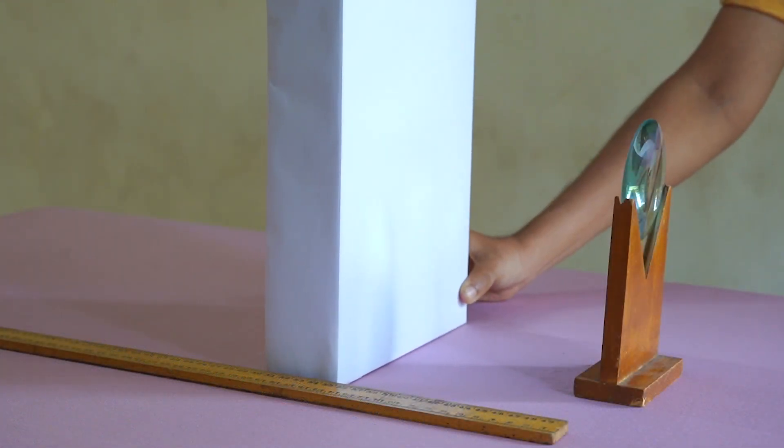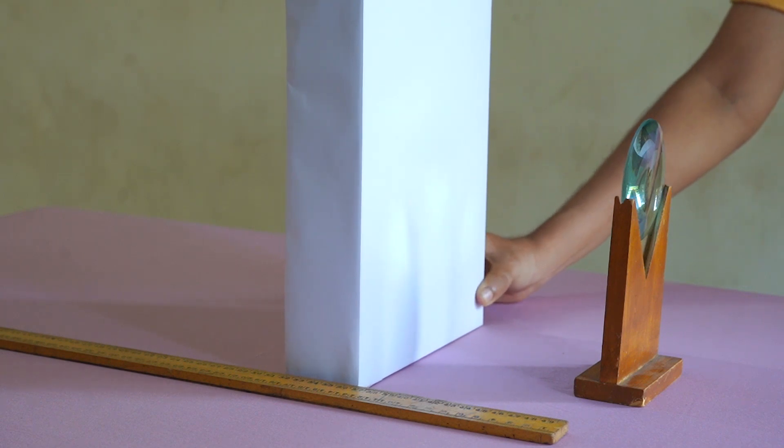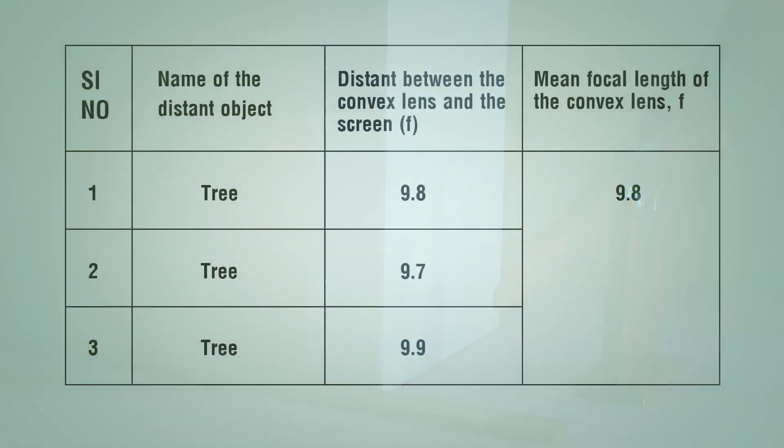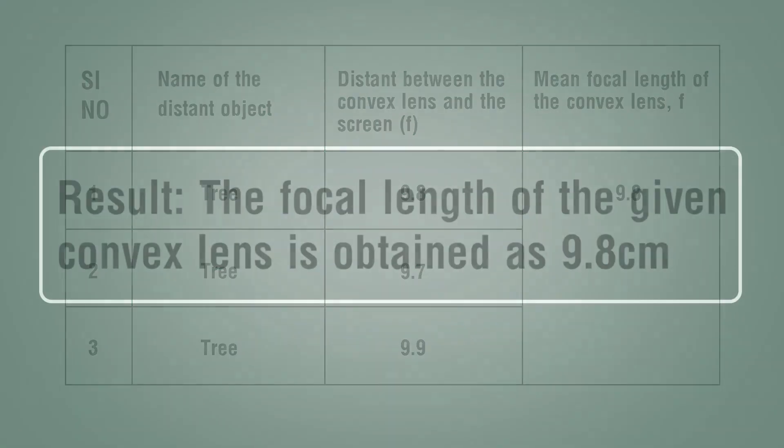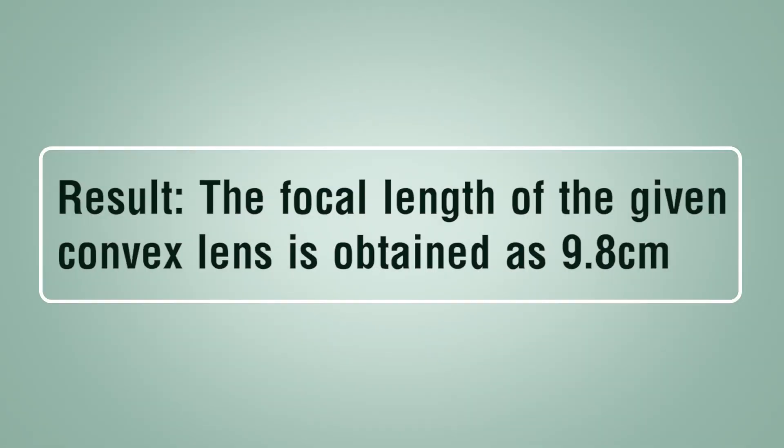Repeat the experiment at least three times and record it in the observation table. Find the mean value of focal length. The focal length of the given lens is obtained as the mean of the observed focal lengths.